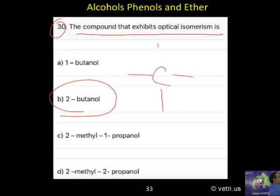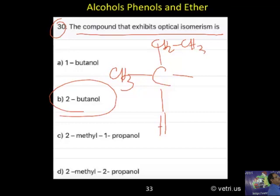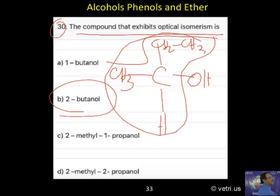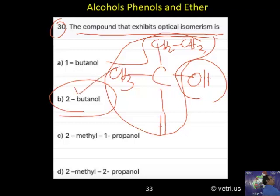See here — this is the general formula: H at the bottom, CH3 on the left, CH2CH3 on the right, and OX at the top. This structure is 2-butanol. If you substitute chlorine, you get 2-chlorobutane. If you substitute methoxy, you get 2-methoxybutane. Anything substituted at the 2-position gives an optically active compound. You must memorize this for optical activity — by substituting any functional group, you create an asymmetric center. So the correct answer is B, 2-butanol.